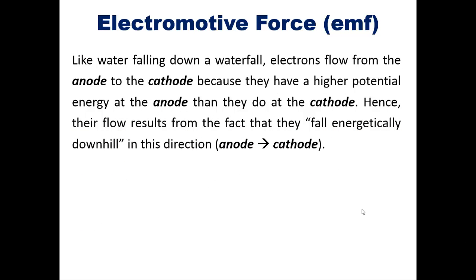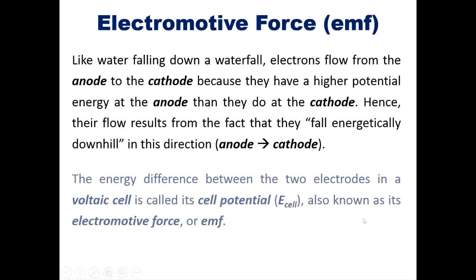Now, like water falling down a waterfall, electrons flow from the anode to the cathode because they have a higher potential energy at the anode than they do at the cathode. Hence, their flow results from the fact that they fall energetically downhill in this direction, anode to cathode. The energy difference between the two electrodes in a voltaic cell is called its cell potential, or E subcell, also known as its electromotive force, or EMF.